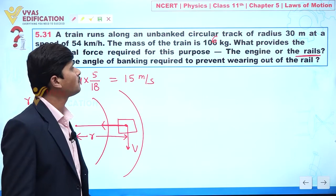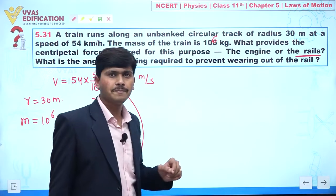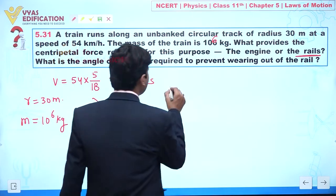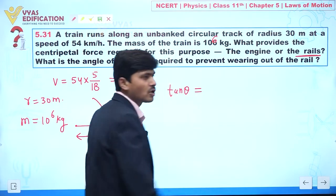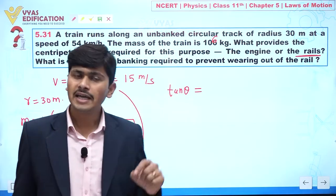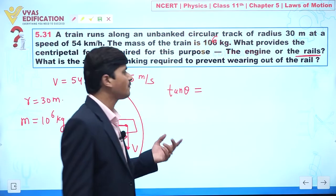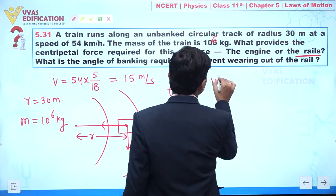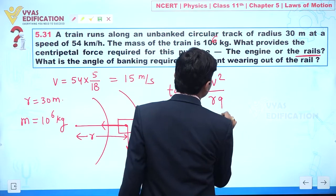What is the angle of banking required to prevent wearing out of the rail? Definitely from the formula, if you know the concept of banking of a road, in banking of a road if we are not taking friction into consideration, we can write tan θ is given by V² by rg.